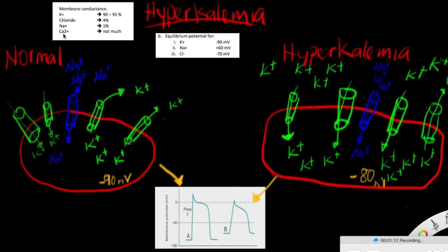So in this case, potassium has the highest conductance at rest. Therefore, the potassium electrochemical gradient has the most effect on the membrane potential. The resting membrane potential tends to move towards the potassium equilibrium potential.